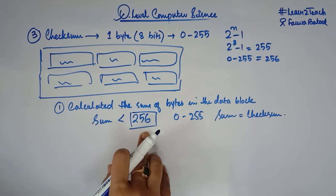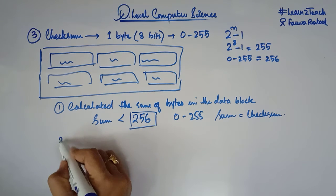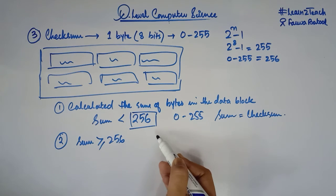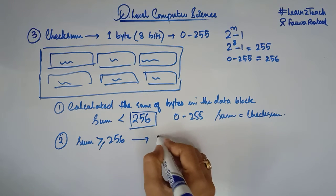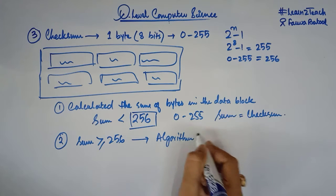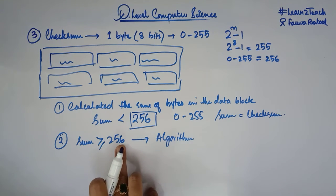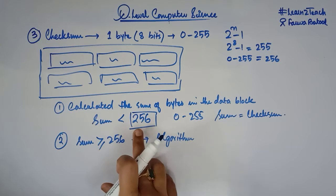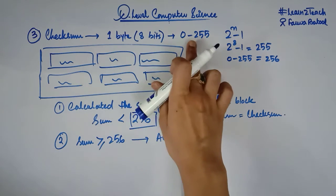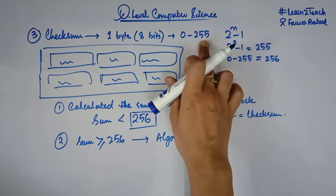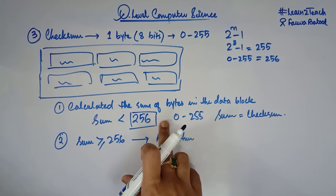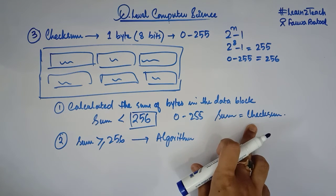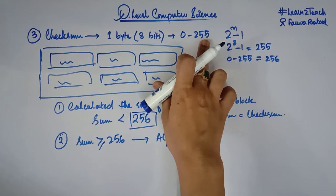But if the sum is greater than or equal to 256, we need to use an algorithm to calculate the checksum value, because we cannot store 256, 257, 258 or any greater value in one byte. One byte can only store values from 0 to 255, so we use an algorithm to bring the checksum within the range of 0 to 255.